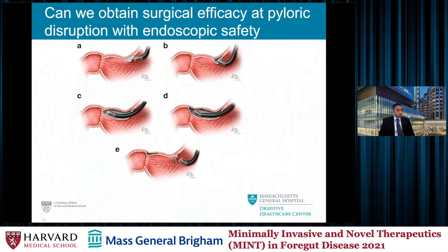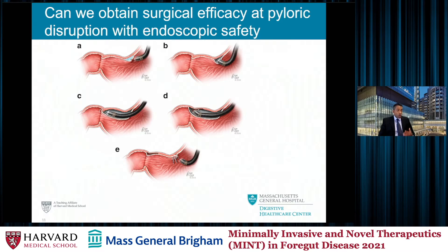The answer is perhaps yes. This is a cartoon depicting the per-oral pyloromyotomy procedure — the POP procedure, also referred to as G-POEM. Very similarly to POEM, using an endoscope you create a submucosal injection to form a pocket, enter that pocket after performing a mucosotomy, perform submucosal dissection until you reach the pylorus, divide the pylorus, and close the entry site. Some perform what's shown here — the lesser curvature approach — and there is also a greater curvature approach, though there are no head-to-head studies. In general, the lesser curvature approach is more streamlined and straightforward.